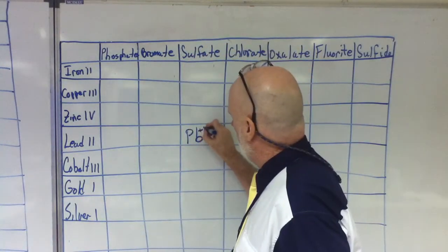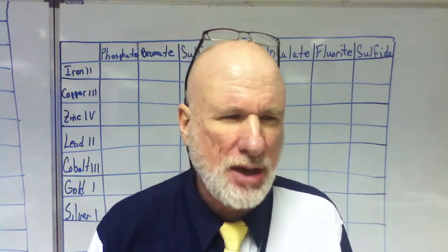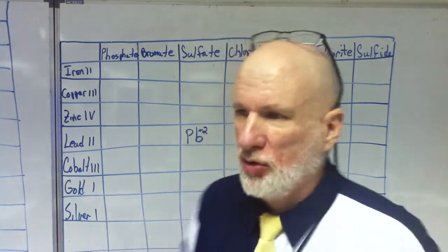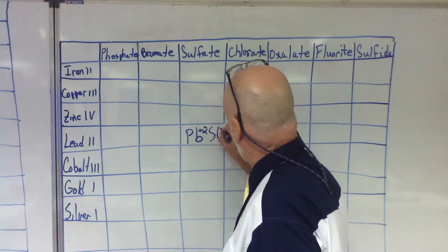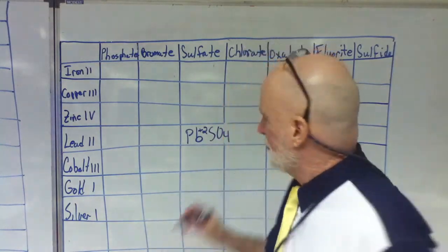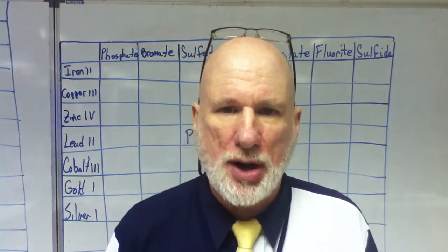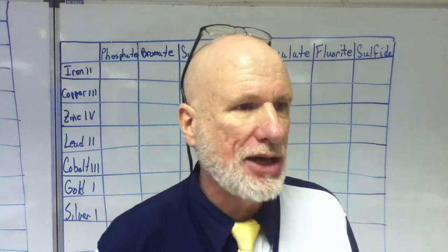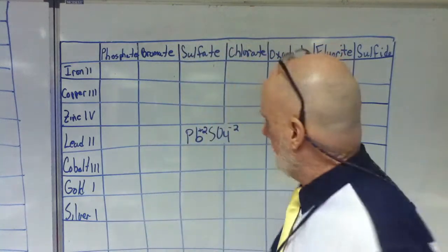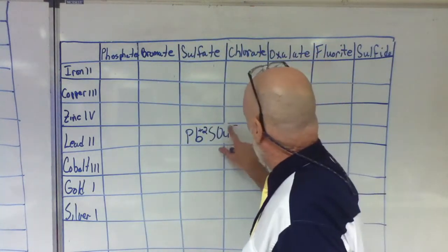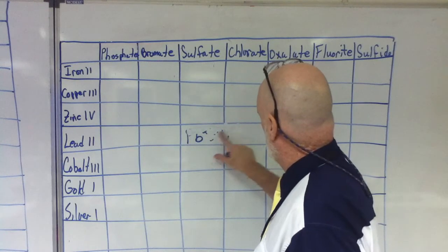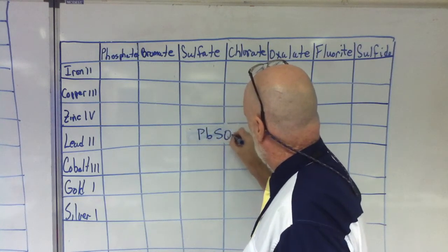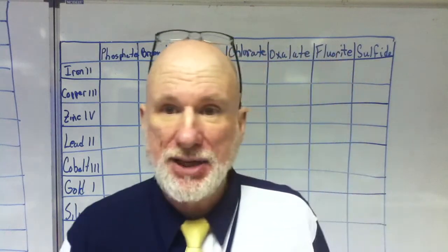So that's going to be plus two. Now, what's sulfate? SO₄. Excellent — SO₄, and what's the charge? Negative two. So how many of each do you need to make it a neutral particle? One each. So the way you would write the formula would be simply PbSO₄. And you would write: lead two sulfate. PbSO₄ would be lead two sulfate.